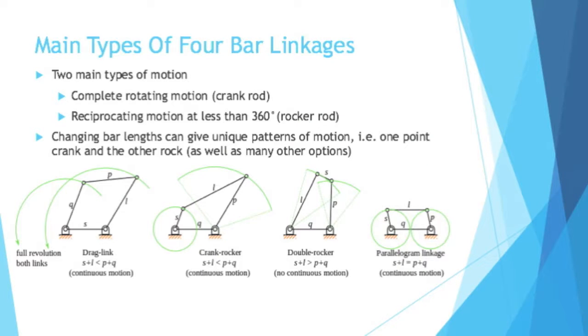Now that we know the main types of bars on a four-bar linkage, what happens when you vary them? You get all sorts of different motions, but really there are categories that all the variations can be put into. There are two main types of motion when talking about four-bar linkages. You have a complete rotating motion, that's called a crank rod, or you have a reciprocating motion at less than 360 degrees. This is called a rocker rod. It rocks back and forth. It doesn't complete a full rotation. By varying the bar lengths, we can get unique patterns of motion. For example, one point could crank and the other could rock, as well as many other variations.